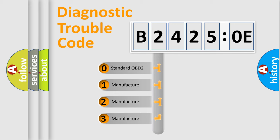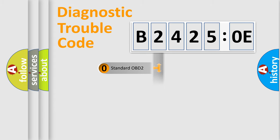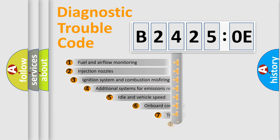If the second character is expressed as zero, it is a standardized error. In the case of numbers 1, 2, 3, it is a manufacturer-specific expression of the car-specific error.